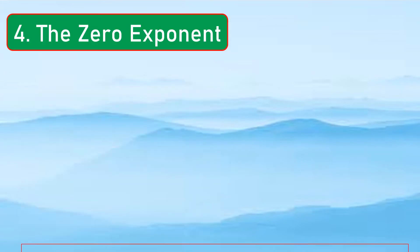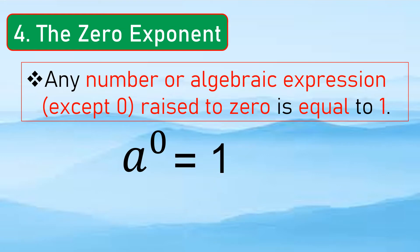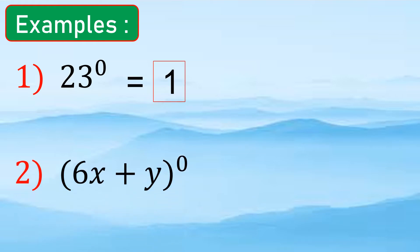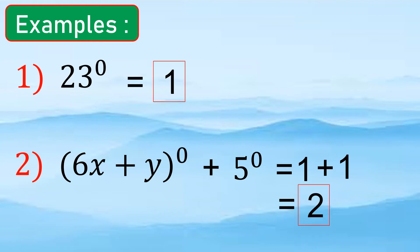So the zero exponent. It states that any number or algebraic expression except 0, raised to 0, is equal to 1. So a to the 0 power equals 1. For example, 23 to the 0 power is equal to 1. And the quantity (6x + y) raised to 0 plus 5 raised to 0 equals 1 plus 1, which equals 2.